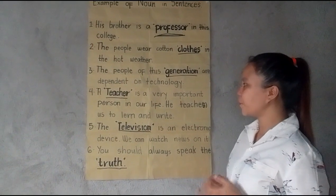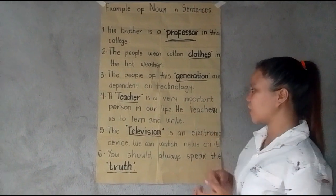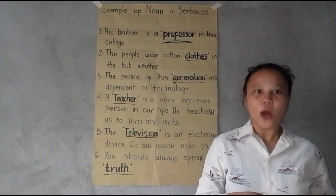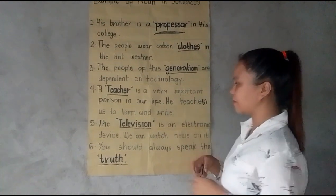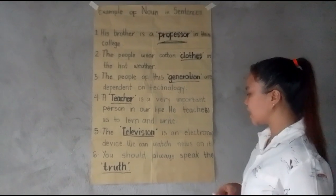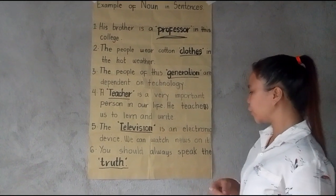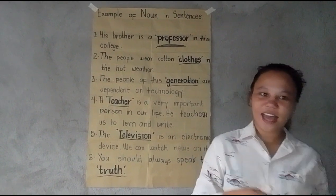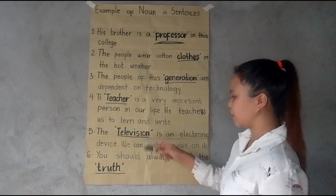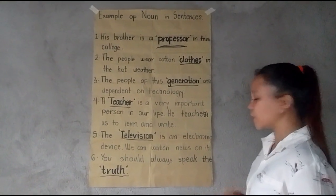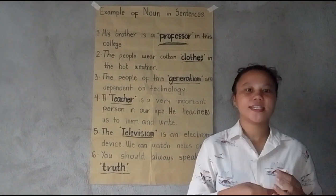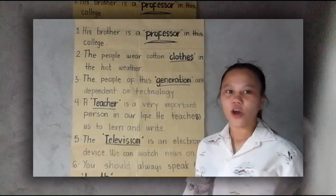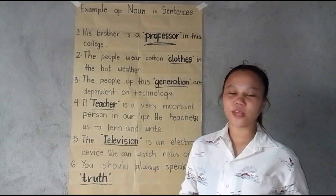Number four: A teacher is a very important person in our life. He teaches us to learn and write. Class, what is the noun in this sentence? Very good — the teacher. Number five: The television is an electronic device we can watch news on. Class, what is the noun? Very good — the television. Number six: You should always speak the truth. Class, what is the noun? Very good — the truth. These are some examples of nouns in sentences.